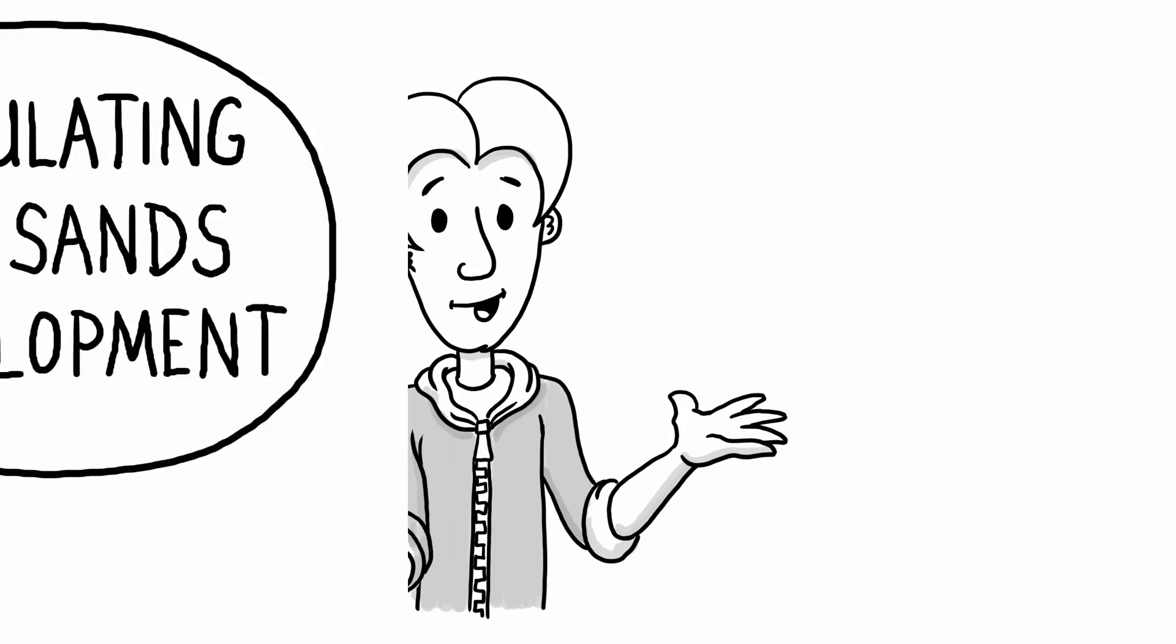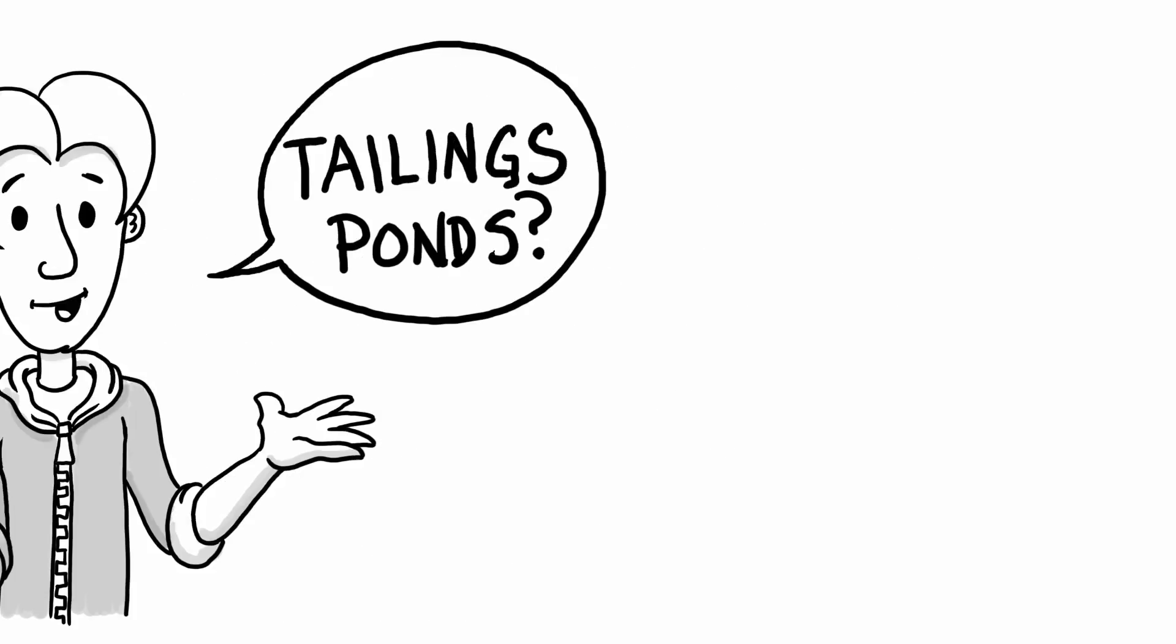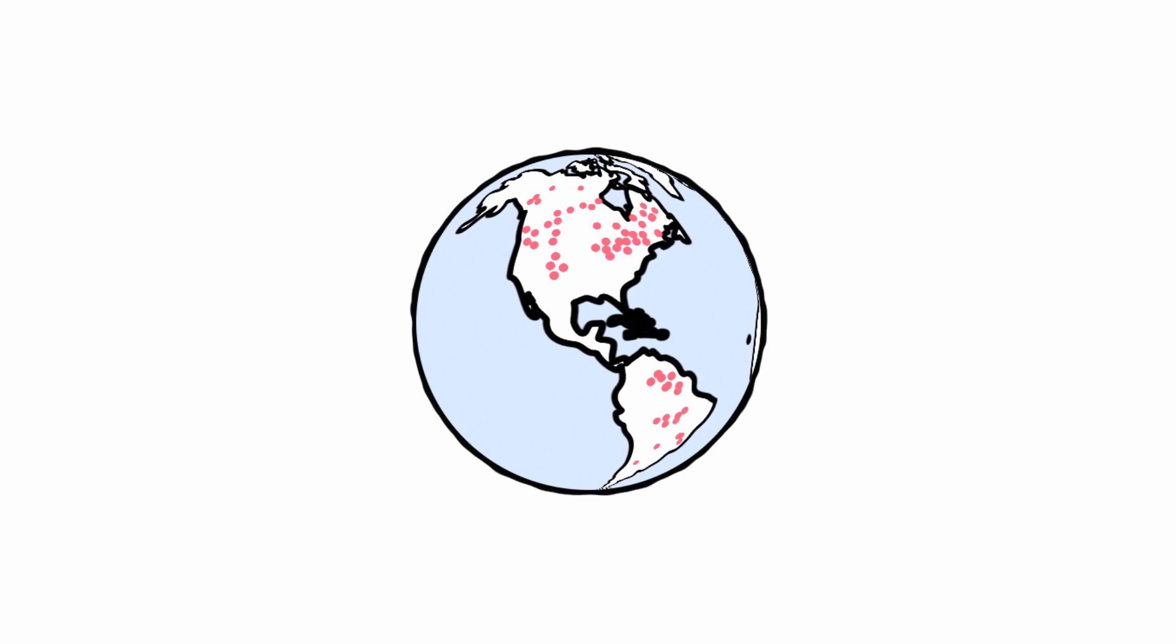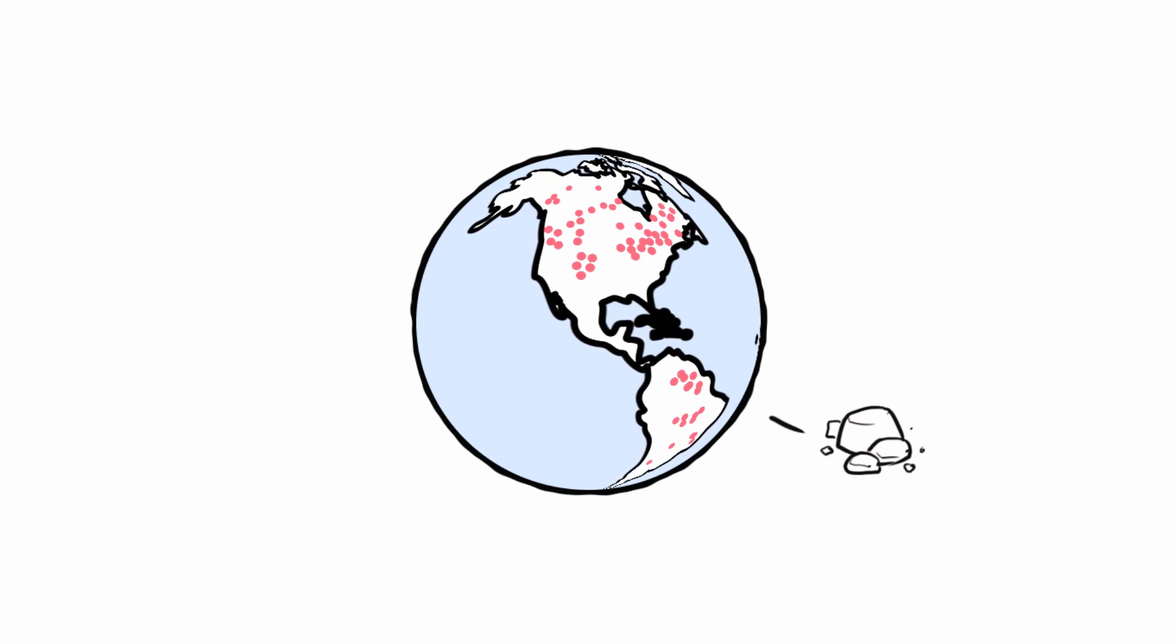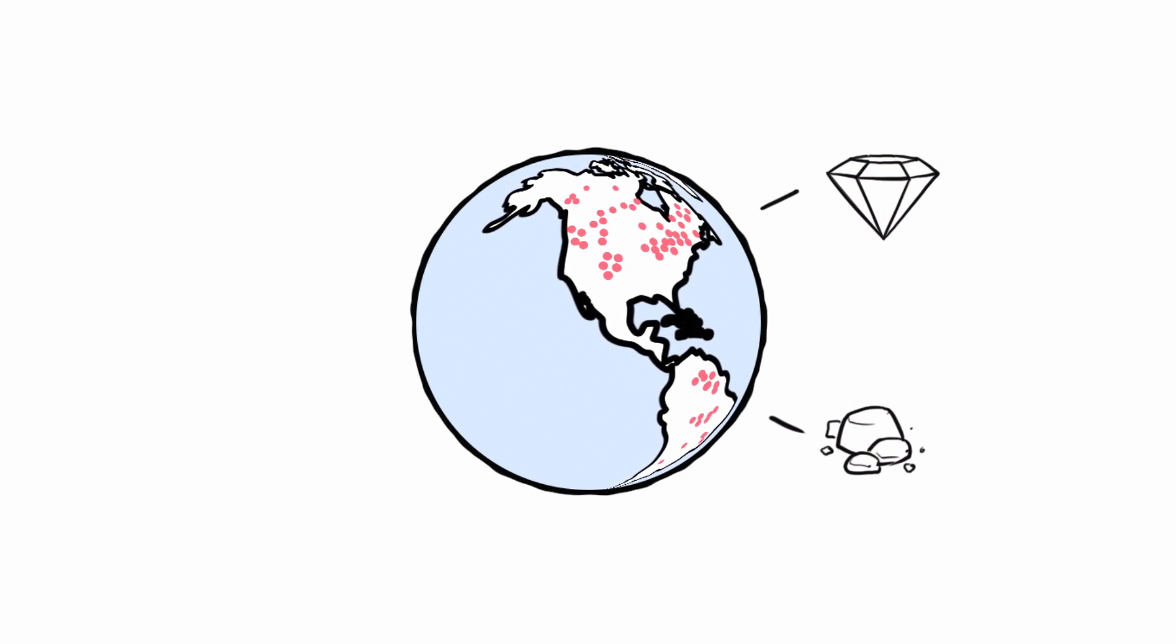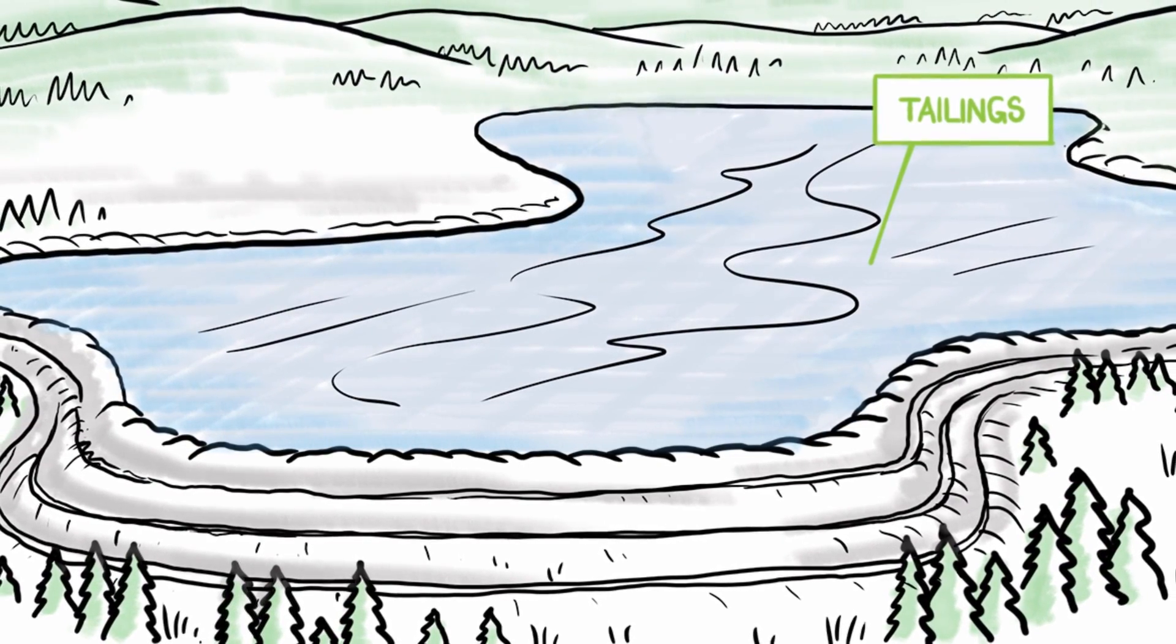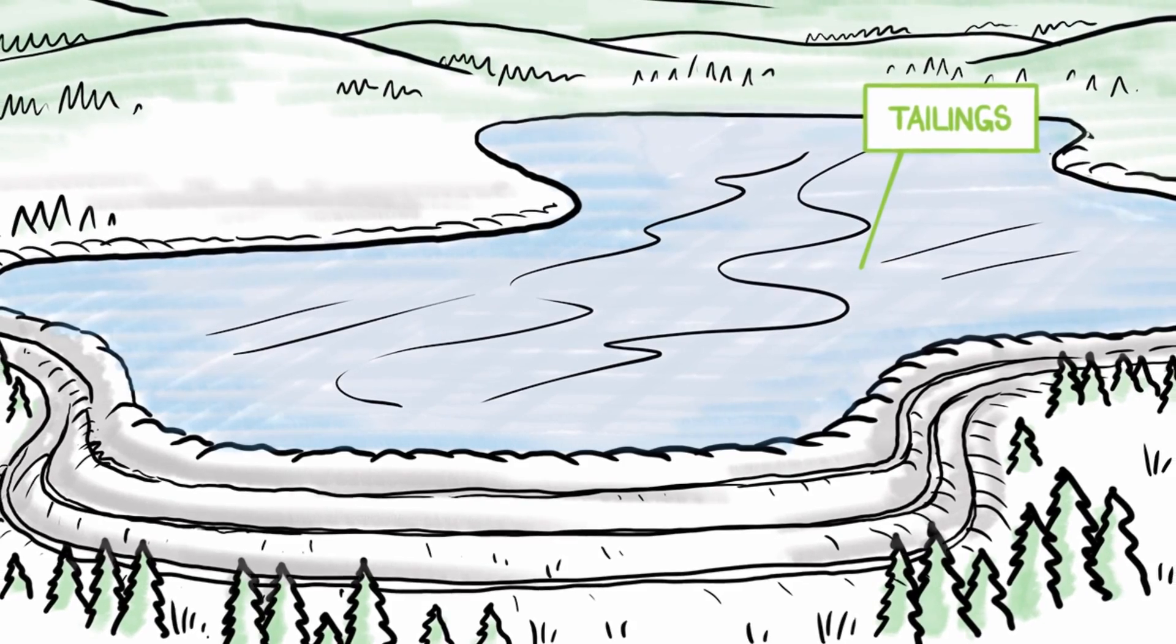Keith asks, what are tailings? Rita explains that there are thousands of mines around the world producing everything from coal and nickel to diamonds and they all produce tailings. Oil sands tailings are a mixture of mostly sand, clay, water and oil.